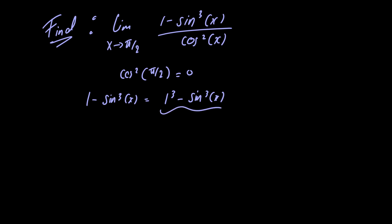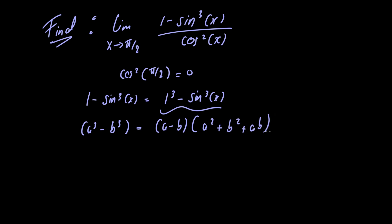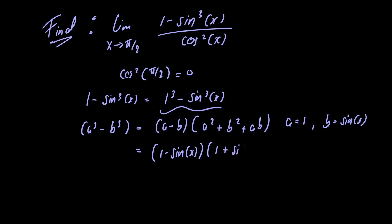Now we can factor this using the difference of cubes formula. The formula states that a cubed minus b cubed is equal to a minus b multiplied by a squared plus b squared plus ab. Taking a equal to 1 and b equal to sine of x, this gives us 1 minus sine of x multiplied by 1 plus sine squared of x plus sine of x.